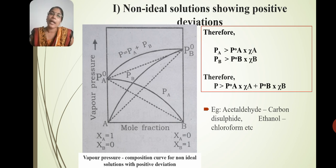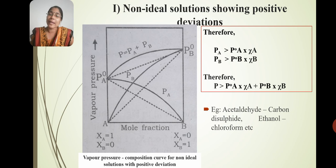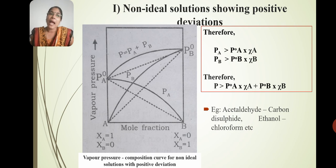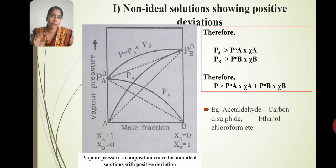This is the way to represent it graphically. The dotted line represents the ideal solution. The positive deviation will be greater than the ideal. Graphically, the curve goes in the upward direction compared to the ideal dotted line. Examples showing non-ideal behavior with positive deviation include acetaldehyde and carbon disulfide.